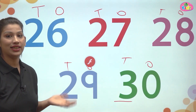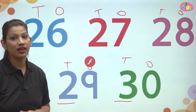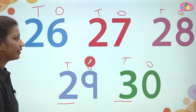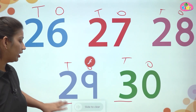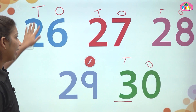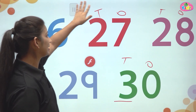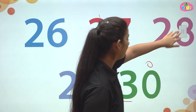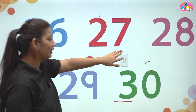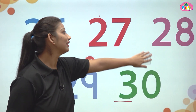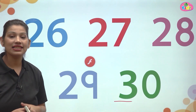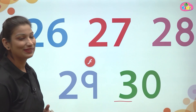Three, zero — thirty. After 29 comes three zero, thirty. We will learn today five numbers: 26, 27, 28, 29, and 30. Let us understand all of them with the help of a video.